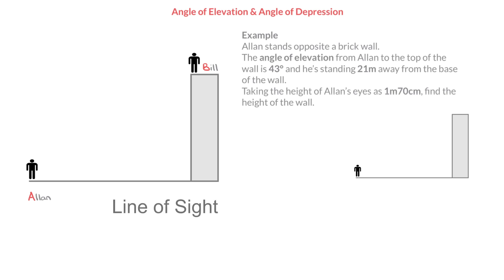Suppose Alan and Bill are speaking to each other, and whilst doing so, because they're polite, they look right at each other. Then the line of sight is the straight line joining Alan's eyes to Bill's eyes. In Alan's case, to look at Bill, he has to look upwards along the line of sight. And in Bill's case, to look at Alan, he has to look downwards along the line of sight.